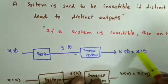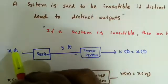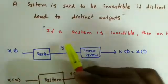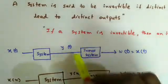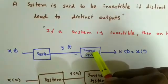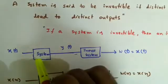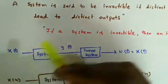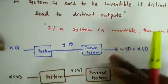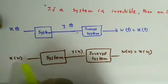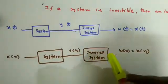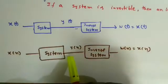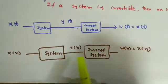If I pass y(t) through the inverse system, I will recover my original signal. Suppose x(t) = u(t) or x(t) = sin(t) — I get some output y(t). To recover my original signal, I pass y(t) through the inverse of the system. Similarly for discrete-time systems: if I give x[n] I get y[n], and passing y[n] through the inverse system recovers x[n]. Different inputs must yield different outputs for the system to be invertible.